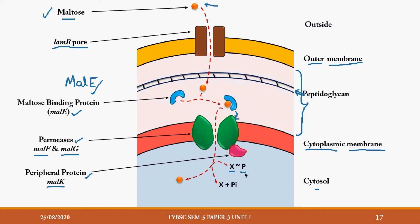Once the solute-binding protein complex interacts with the permease or integral protein, the pore opens and maltose enters the cell. Since this is active transport, energy is required. A high-energy phosphate bond compound (ATP) is present, and that phosphate bond is broken down, releasing inorganic phosphate. The energy released from this bond breakage is used for the transport of maltose inside the cell.